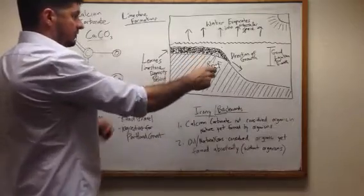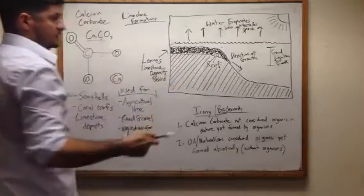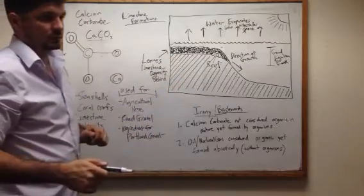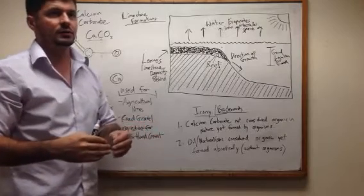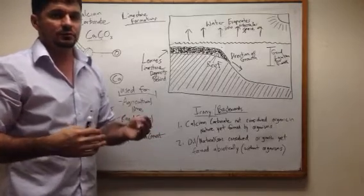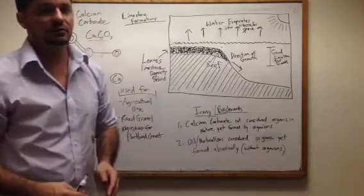Basically, if you have a large limestone deposit, it's because earlier during the Earth's evolution, the Earth had much deeper oceans. Plus, the Earth was completely covered in water, guaranteed.